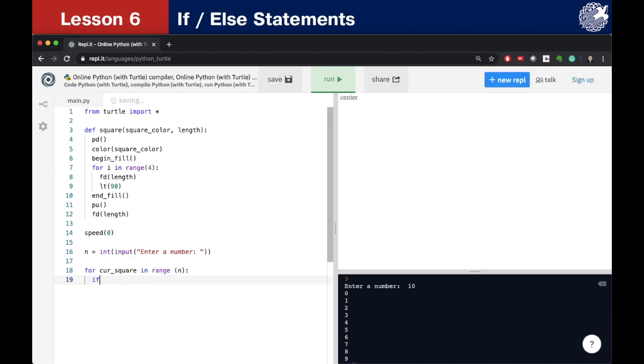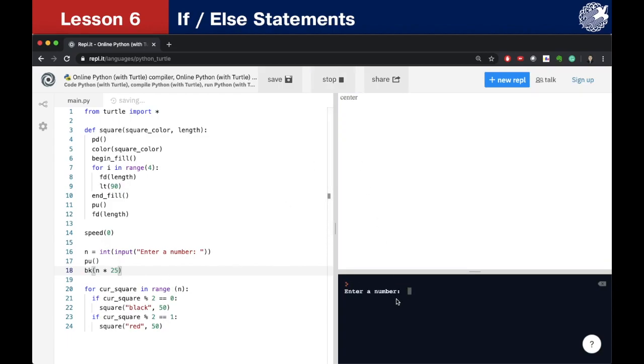Now instead of print command, let's write our first condition. If current square modulus 2 will be 0, we must call the square function with parameters of black and 50. Now let's write the second condition. If current square modulus 2 will be 1, we must call the square function with parameters of red and 50. Let's check our code. And like you can see, everything is good.